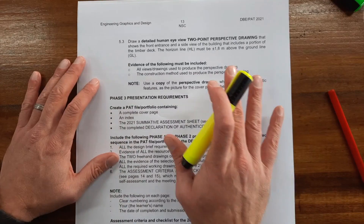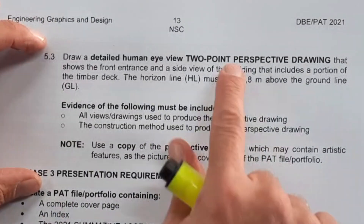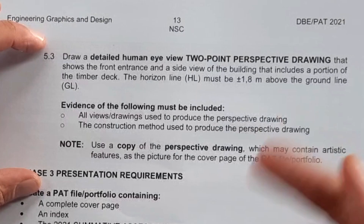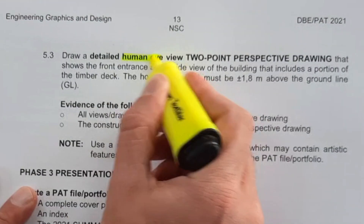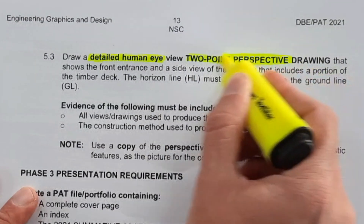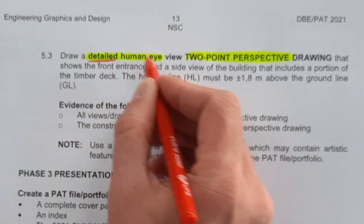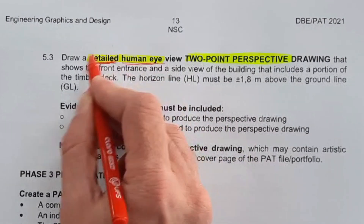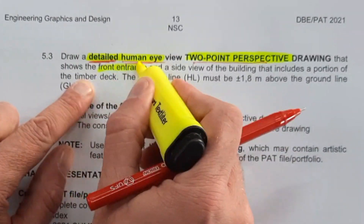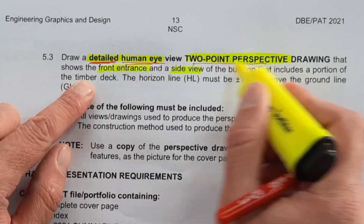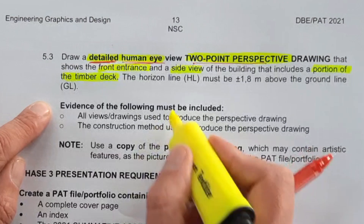Here we are on page 13 in the actual PET document. We're going to read the requirements for 5.3, which is your two-point perspective. If you don't have this document, I've placed the download link in the description. We have to draw a human eye level, detailed human eye view, two-point perspective. It must be detailed — you're going to have to put in all the details you would see in a human eye perspective, including windowsills and door frames.